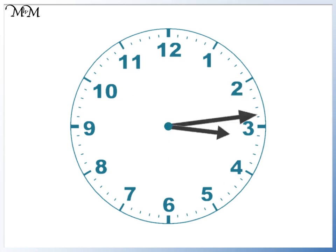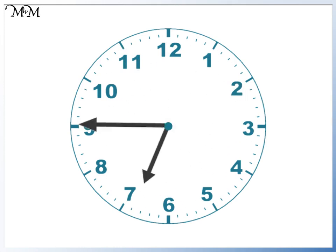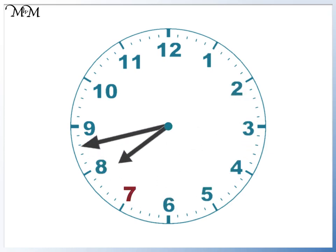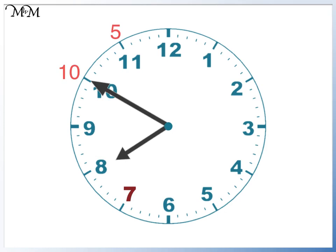This time we'll start at 7 o'clock. The minute hand moves around to 10. This is 5, 10 — 10 minutes to the next hour, so it's 10 to. The hour hand is moving towards 8, so it is 10 minutes until 8 o'clock. We say that it's 10 to 8.